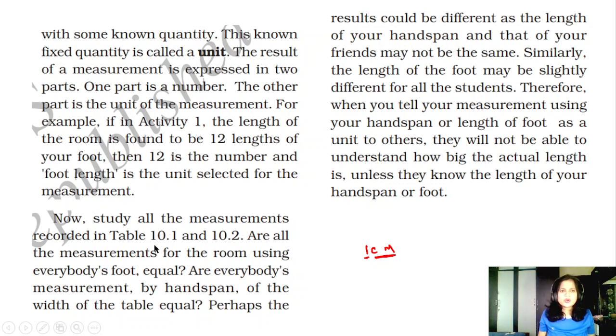Now, study all the measurements recorded in table 10.1 and 10.2. Are all measurements for the room using everybody's foot equal? No, they are different depending on their foot size. Are everybody's measurement by the hand span of the width of the table equal? No, they are also unequal because everybody's hand is of different size. Perhaps, the result could be different as the length of your hand span and that of your friends may not be the same. Similarly, length of the foot may be slightly different for all the students. Therefore, when you tell your measurement using your hand span or the length of the foot as a unit to others, they will not be able to understand how big the actual length is unless they know the length of your hand span or the foot.